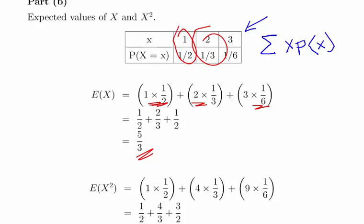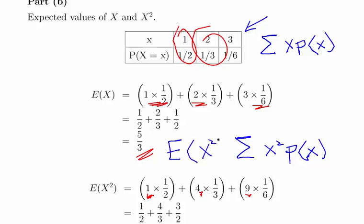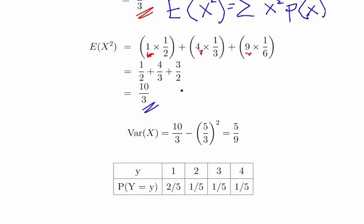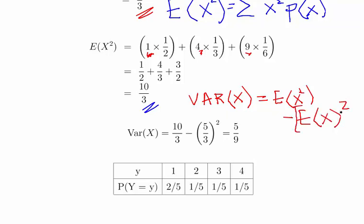The expected value of x squared: we replace the values of x with x squared. So 1 becomes 1, 2 becomes 4 and 3 becomes 9. So essentially what we're doing is squaring our values of x and multiplying by the probability — we don't change the probability, just the value of x to x squared. When we work that out we end up with 10 over 3. The variance of x equals the expected value of x squared minus the expected value of x, squared. So that's 10 over 3 minus 5 over 3 squared, which works out to be 5 over 9.